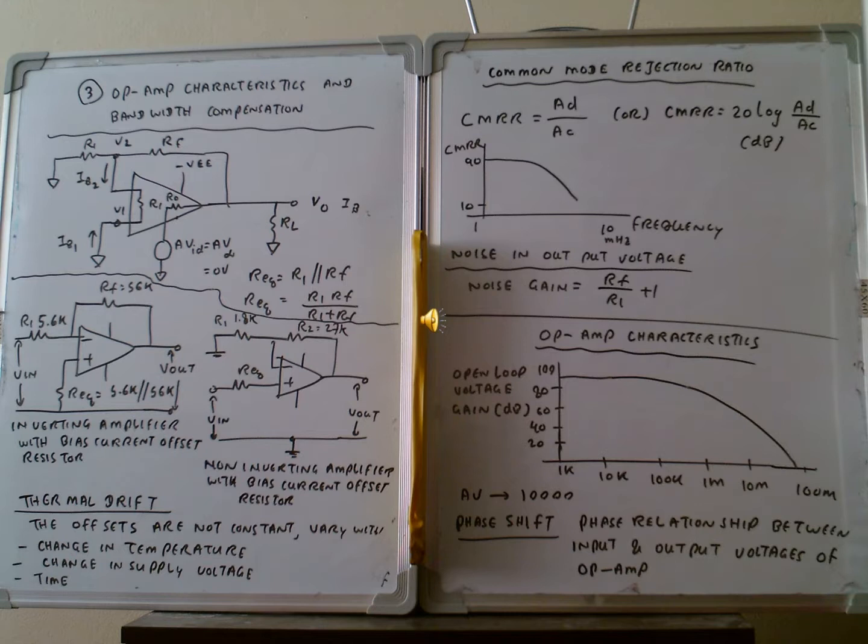Looking at the operational amplifier circuit, R1 has one side connected to V-in and the other side connected to the junction between R1 and RF. The RF is connected to the output. The output is also connected through R0 to the output terminal, and the output terminal connects to RF. This is the connection configuration of the operational amplifier.